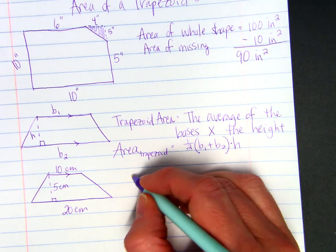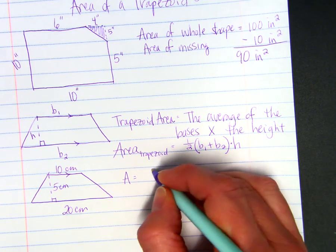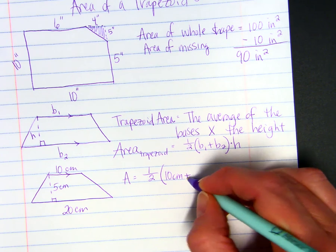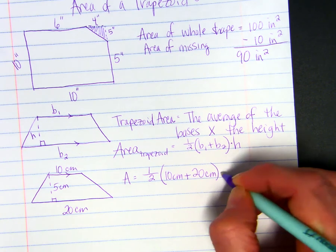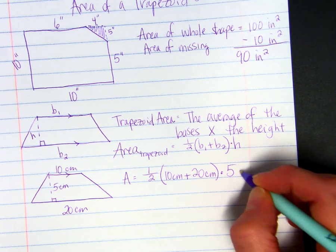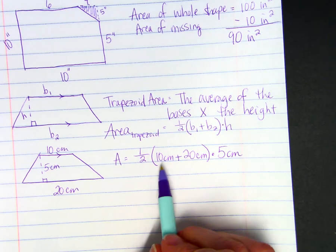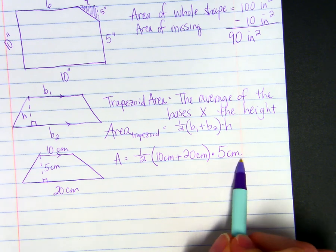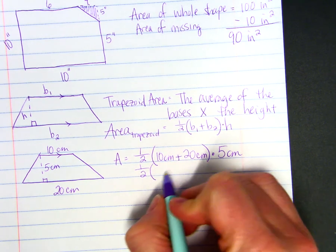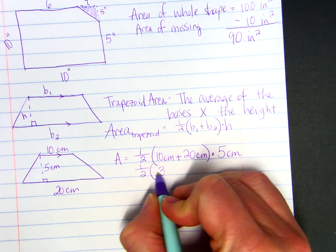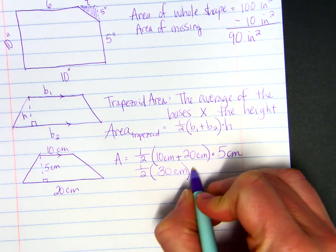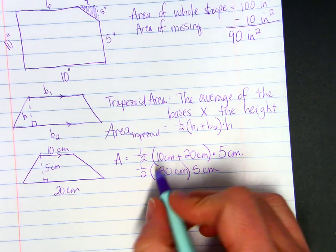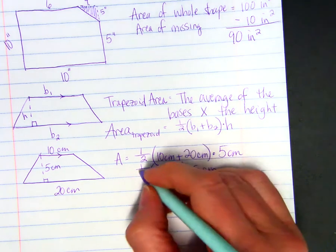So to find the area, we would do one-half. We add 10 centimeters plus 20 centimeters, and then times it by 5 centimeters. If you notice, we have centimeters times centimeters, which would be centimeters squared. So 10 plus 20 is 30. Half of 30 is 15.